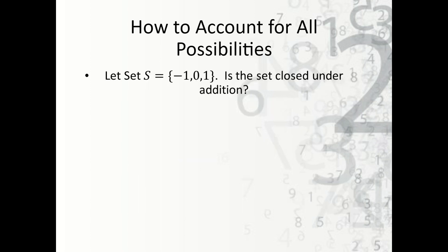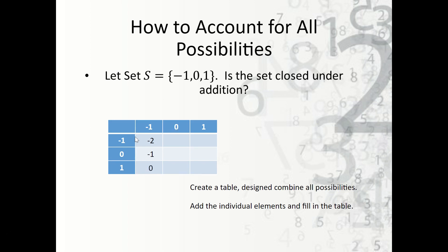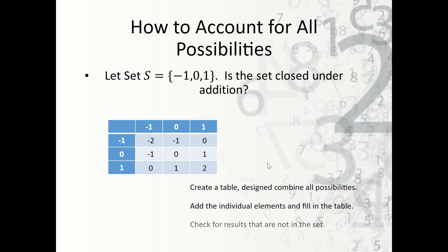So how do we account for all the possibilities? We're going to create a table designed to combine all the possibilities. We have our table, and we're going to add up each of the values. Negative one plus negative one is negative two; negative one plus zero is negative one; negative one plus one is zero; zero plus negative one is negative one; zero plus zero is zero; zero plus one is one; one plus negative one is zero; one plus zero is one; and one plus one is two. We can see that we have two examples that are not in the set: negative two and positive two. Therefore the set is not closed.